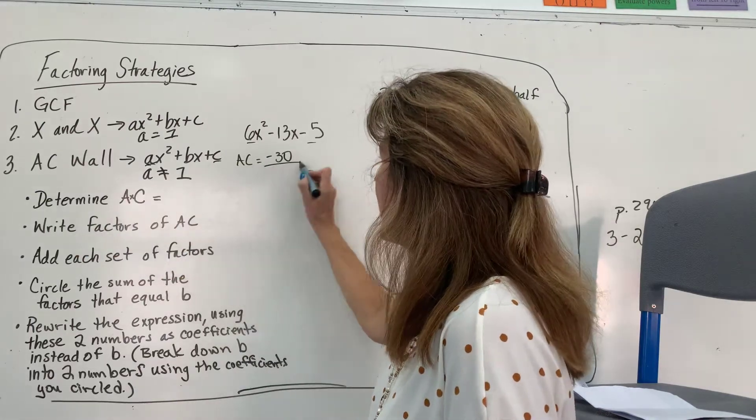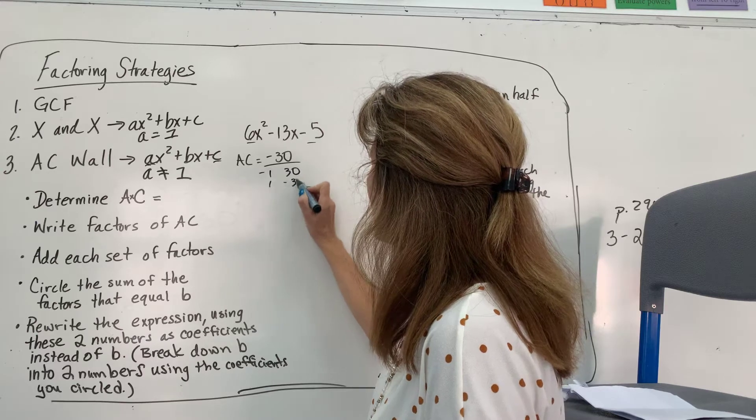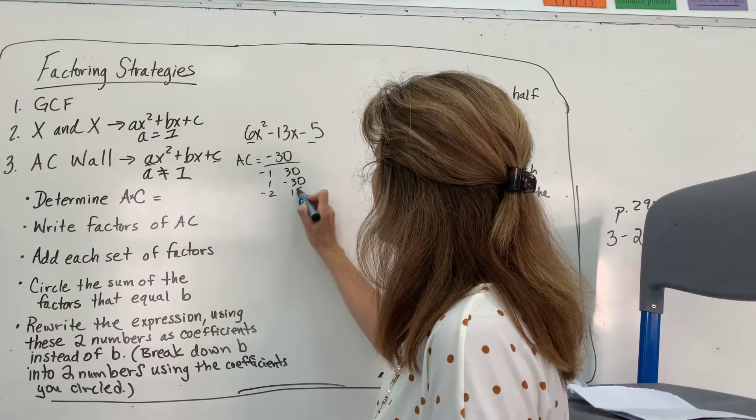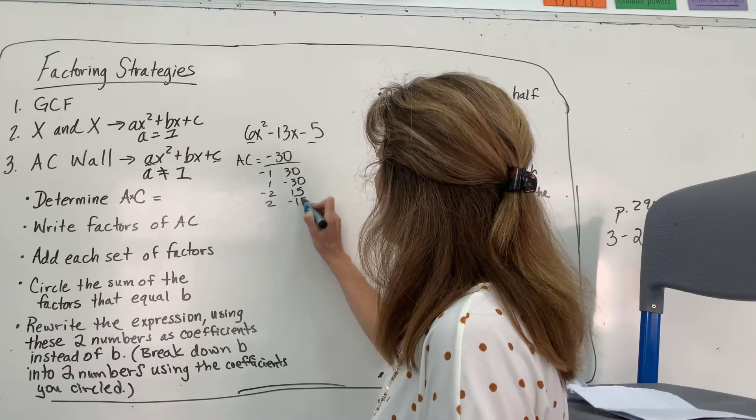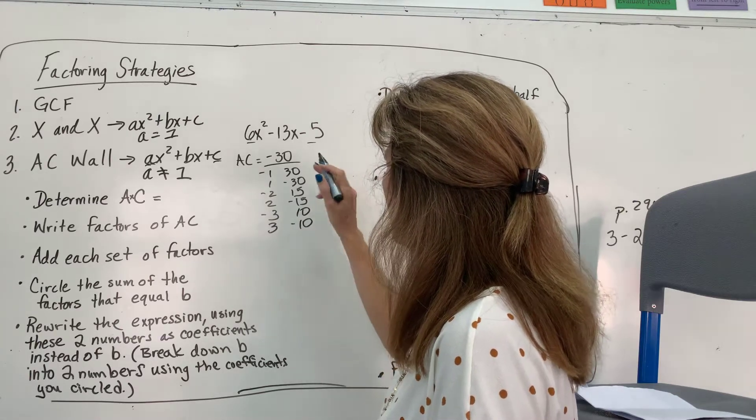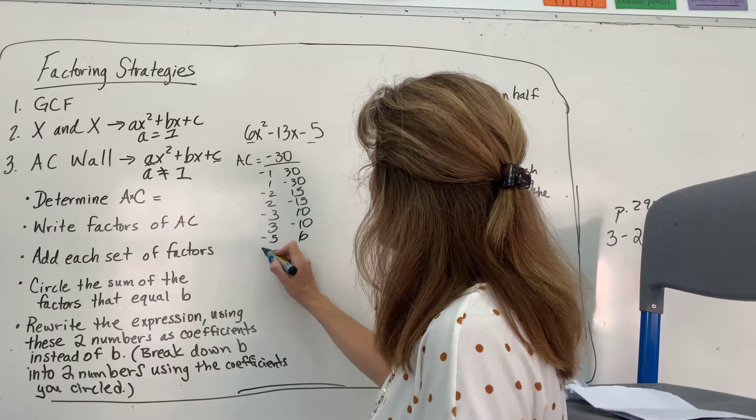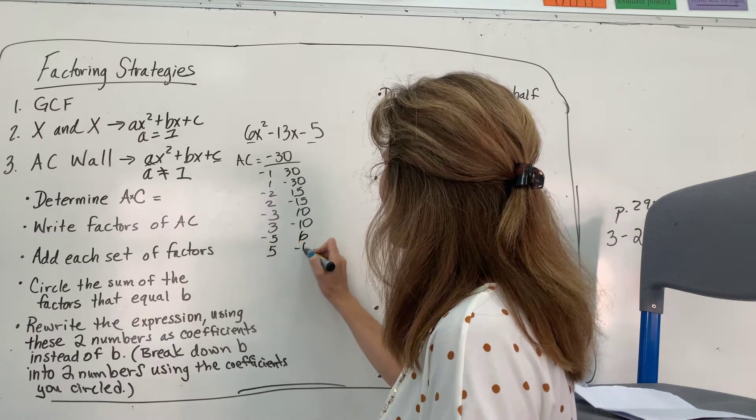Now, I'm going to write down all the factors of AC. All right. Negative 1, 30. 1, negative 30. Negative 2, 15. 2, negative 15. Negative 3, 10. 3, negative 10. Negative 5, 6. And 5, negative 6.